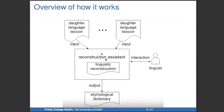Let me explain how it works so it's not a black box. You have your various daughter language lexicons that should be machine-readable. An important point of the system is they don't have to be perfectly semantically aligned. Most computer-based work in historical linguistics has used a very small wordlist, but we don't want that — we want to use as large lexicons as possible.